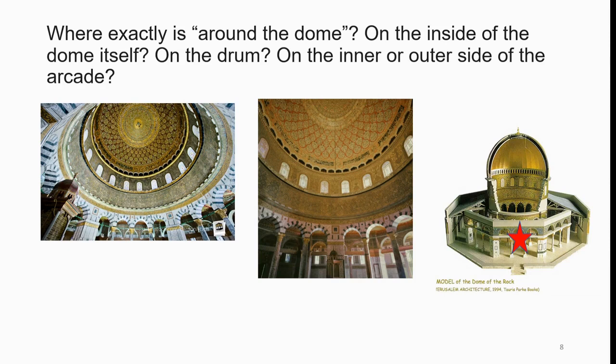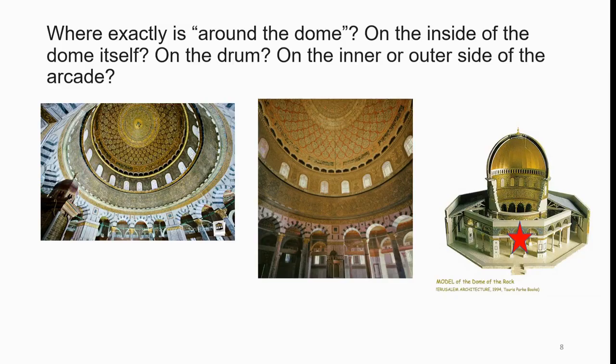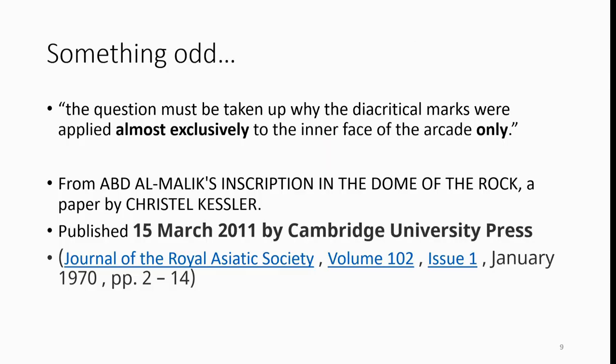The outer wall of the Dome has an inner arcade supporting part of the roof, and further in is the drum supporting the dome above. If you look at the picture in the middle, the drum is round in shape, unlike the outer parts which are octagonal. This is significant later — for most of its history the drum was actually octagonal, the same as the arcade and outer part.